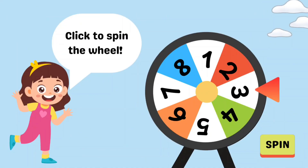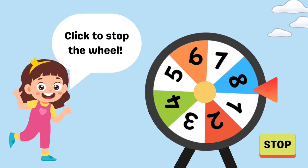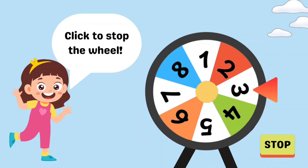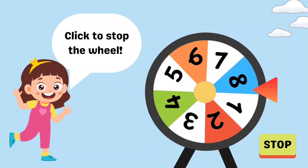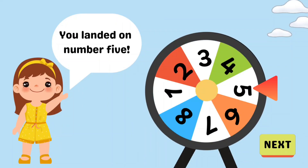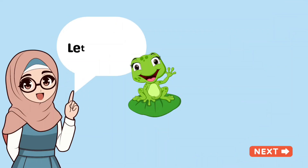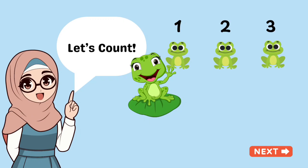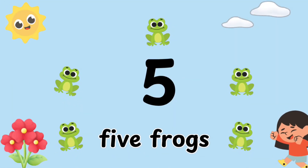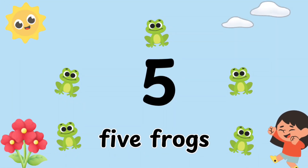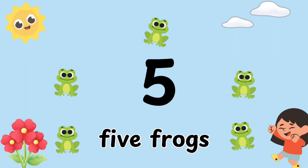Click to spin the wheel. Now click to stop the wheel. Wow! You landed on number 5. Let's count: 1, 2, 3, 4, 5 frogs. Five frogs!